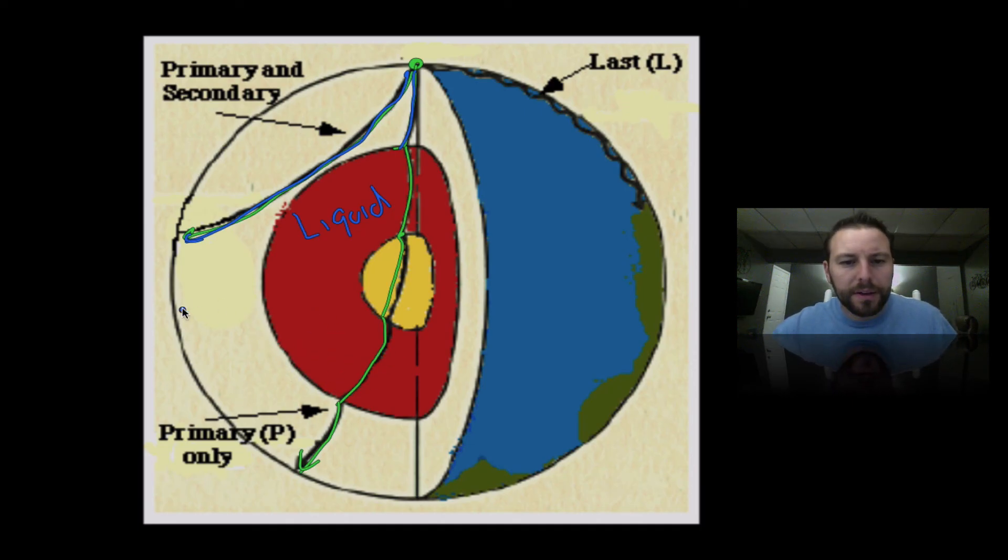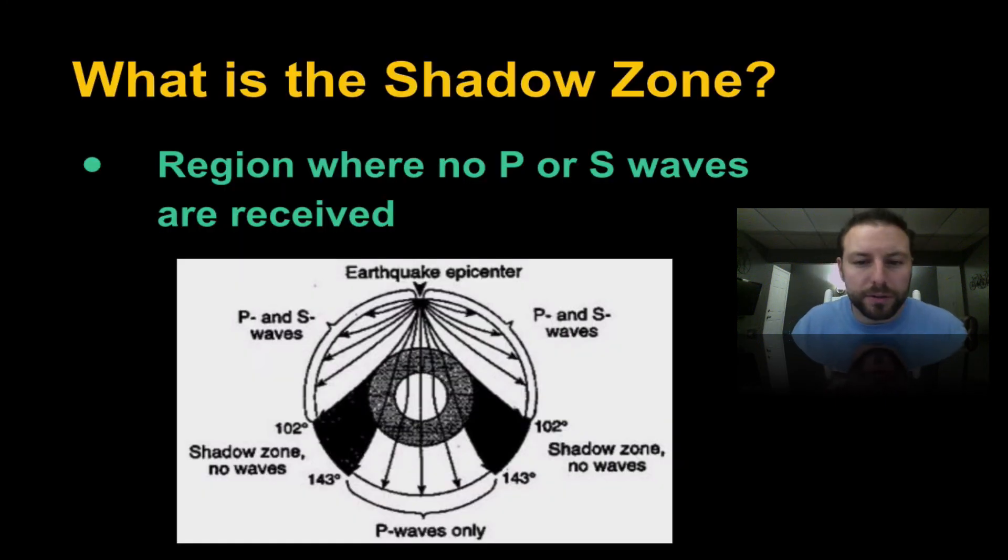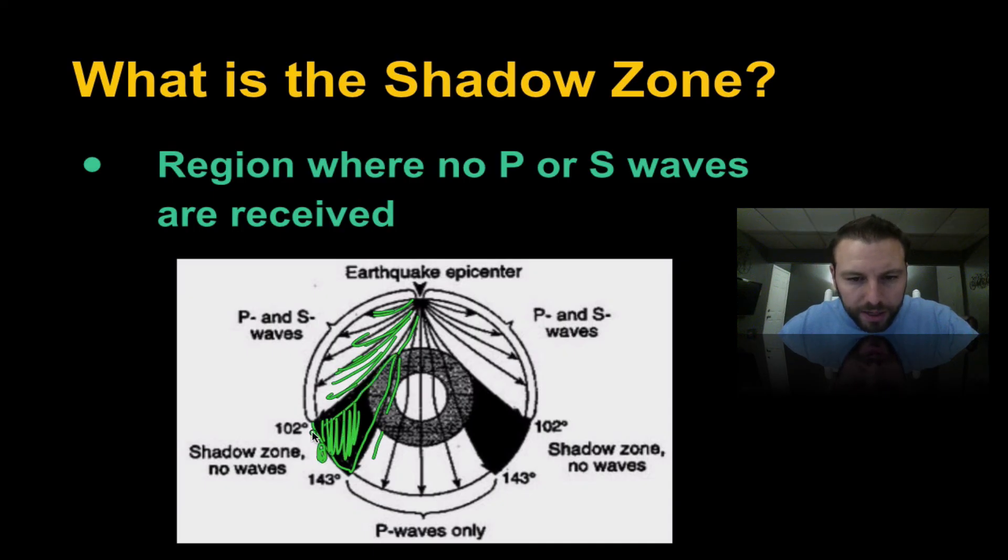The area where no waves are appearing are known as the shadow zone. So here once again, we have our P and the S waves moving out from our epicenter, going through. Primary waves able to make it all the way through. But right here in this region, no waves are felt. So if you're standing anywhere over here on this side of the planet, you would never know an earthquake occurred. Seismographs would never pick it up. Anywhere else, it's going to at least pick up a primary wave.